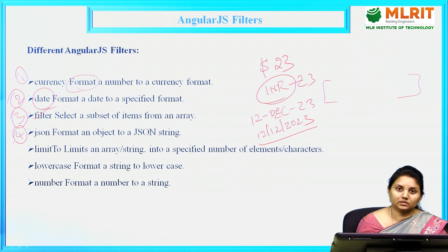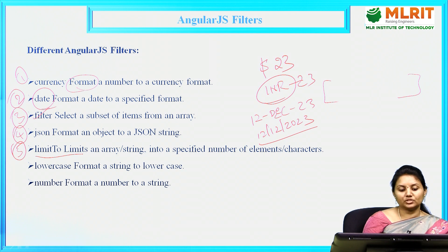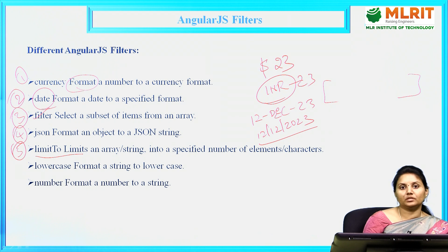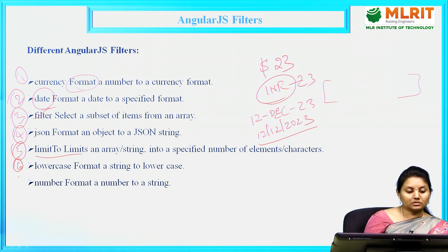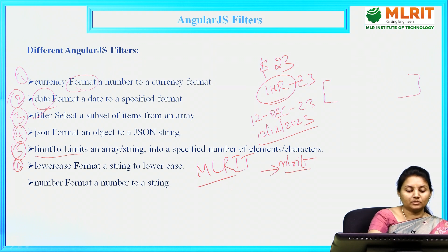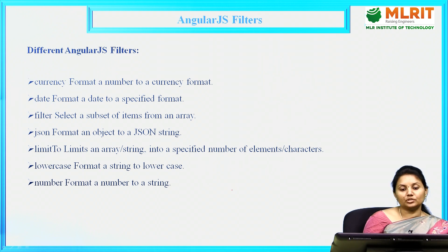Similarly, JSON format — a JavaScript object format can be changed to a JSON string. And limitTo limits an array string to a specified number of elements or characters — whenever some threshold has to be assigned. Then lowercase filter converts to lowercase format. Number filter formats a number to a string. So these are the different AngularJS filters that we have.